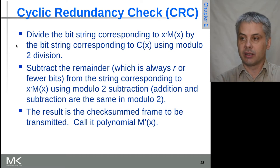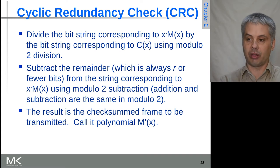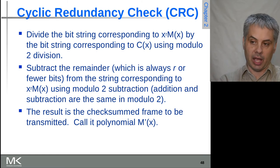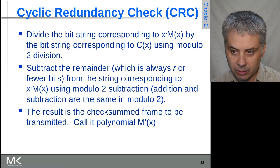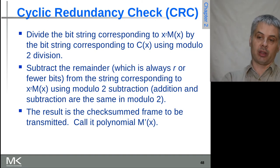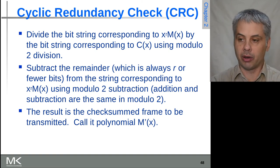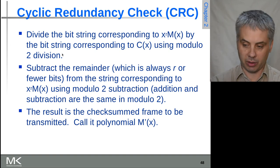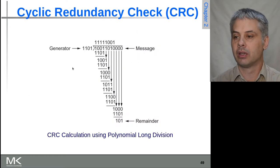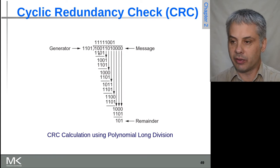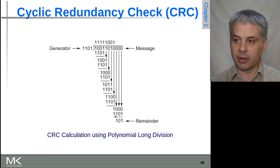We then divide that result by the bit string corresponding to c(x) using modulo-2 division, which as explained is performed using repeated subtraction. That gives us the remainder — the remainder is the CRC check code we want. The final transmitted frame m'(x) is the original message with the CRC appended at the end.